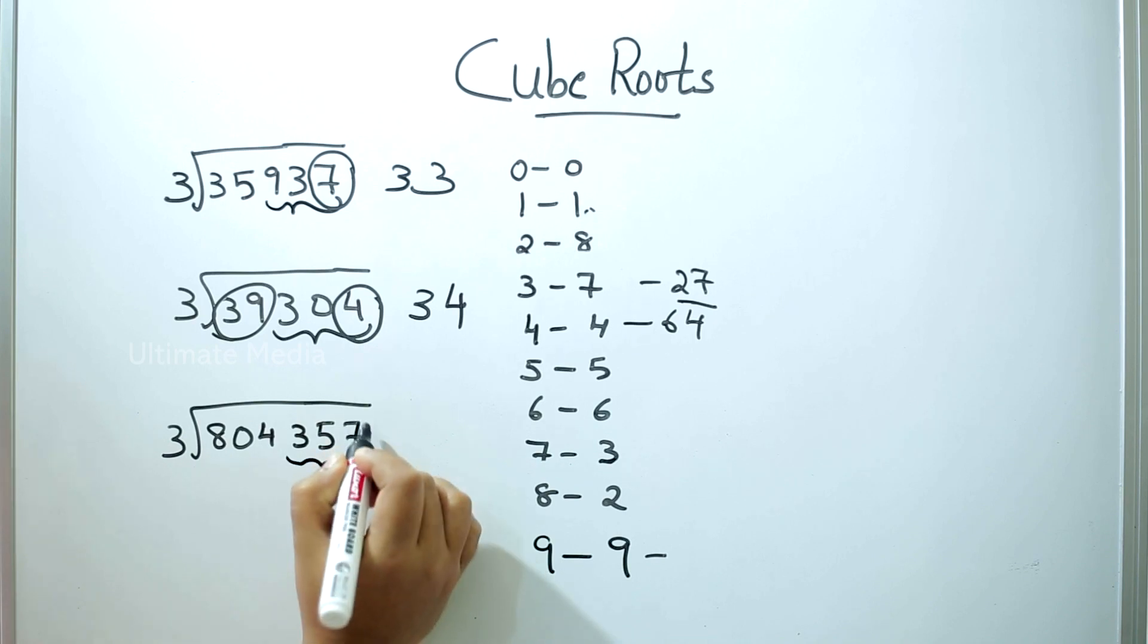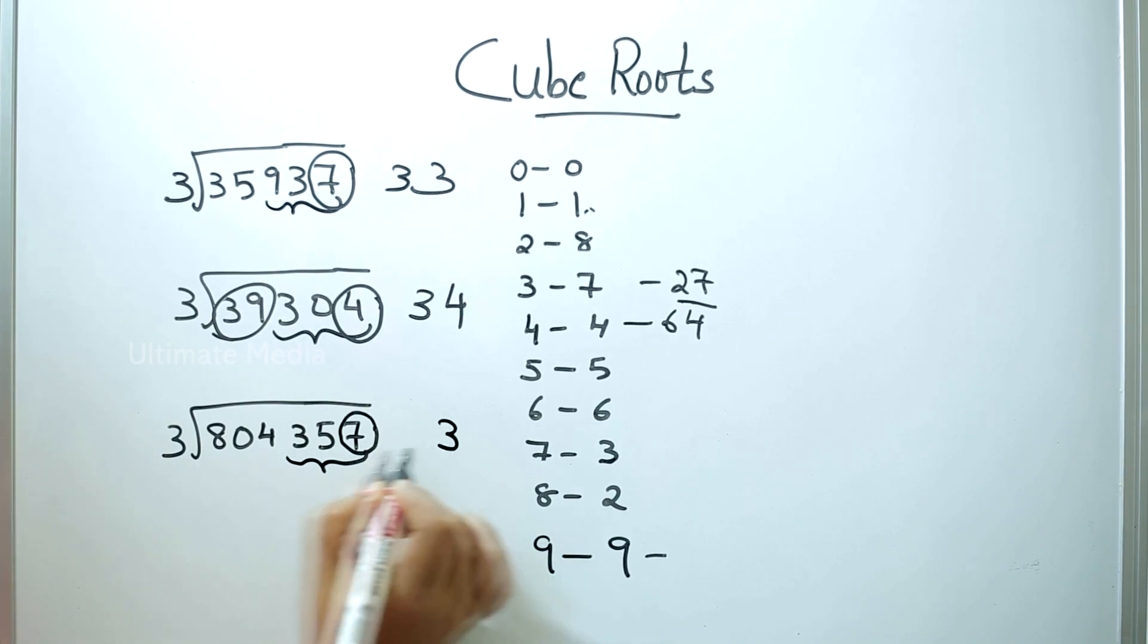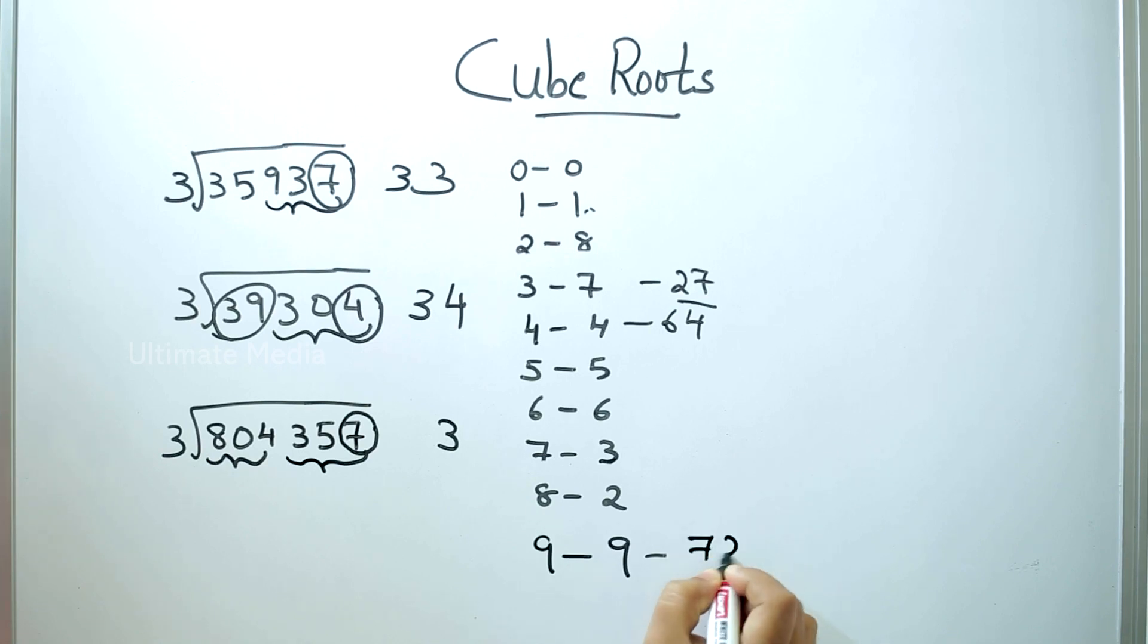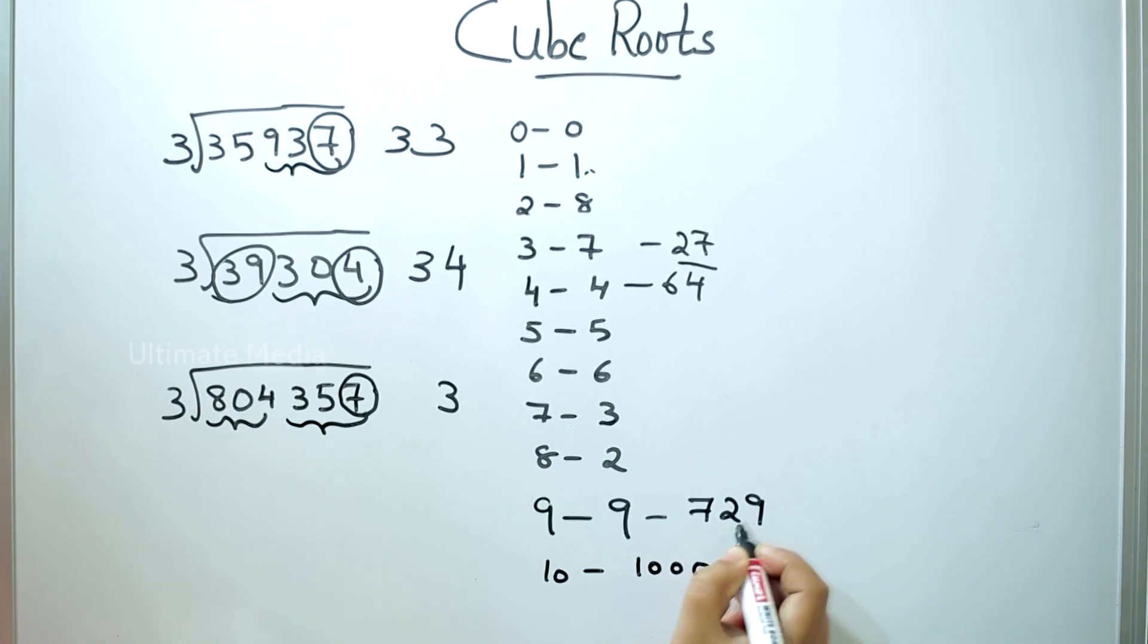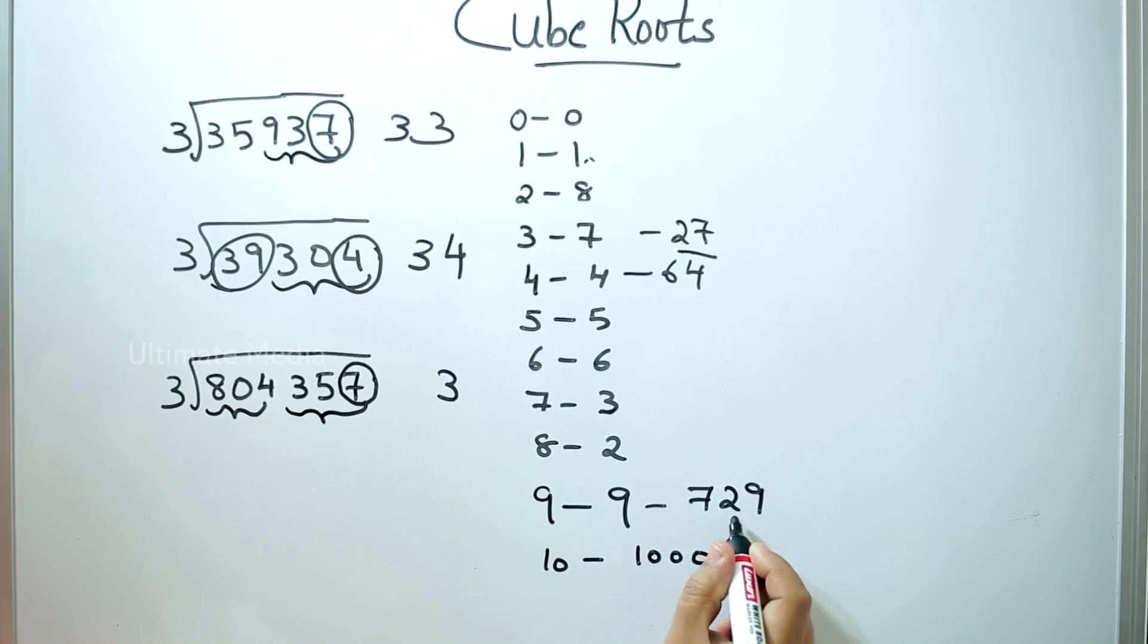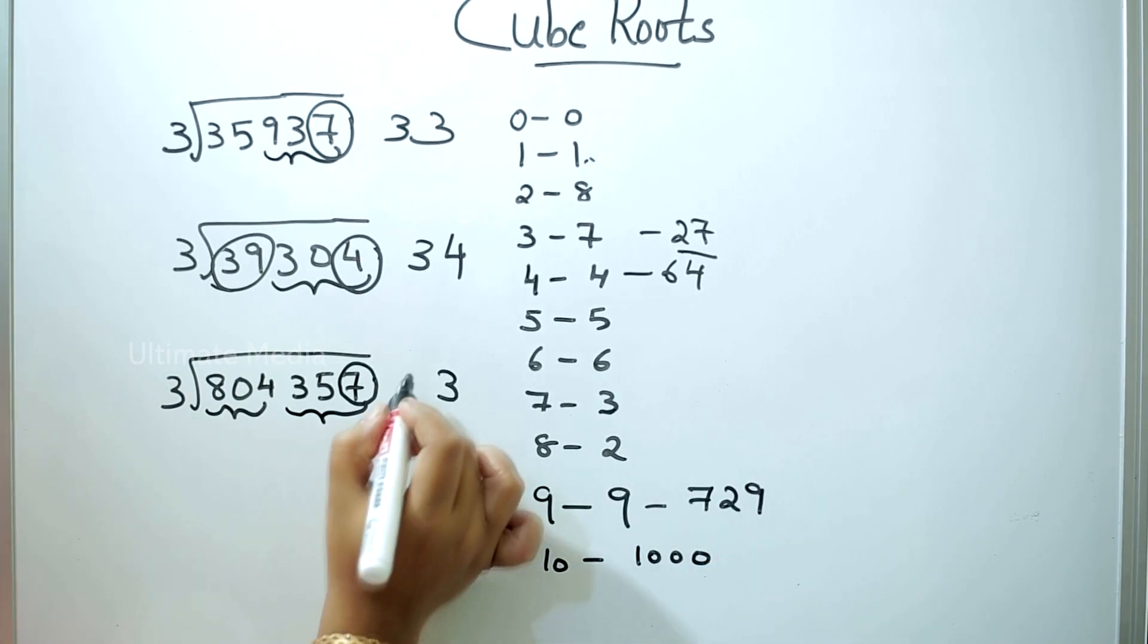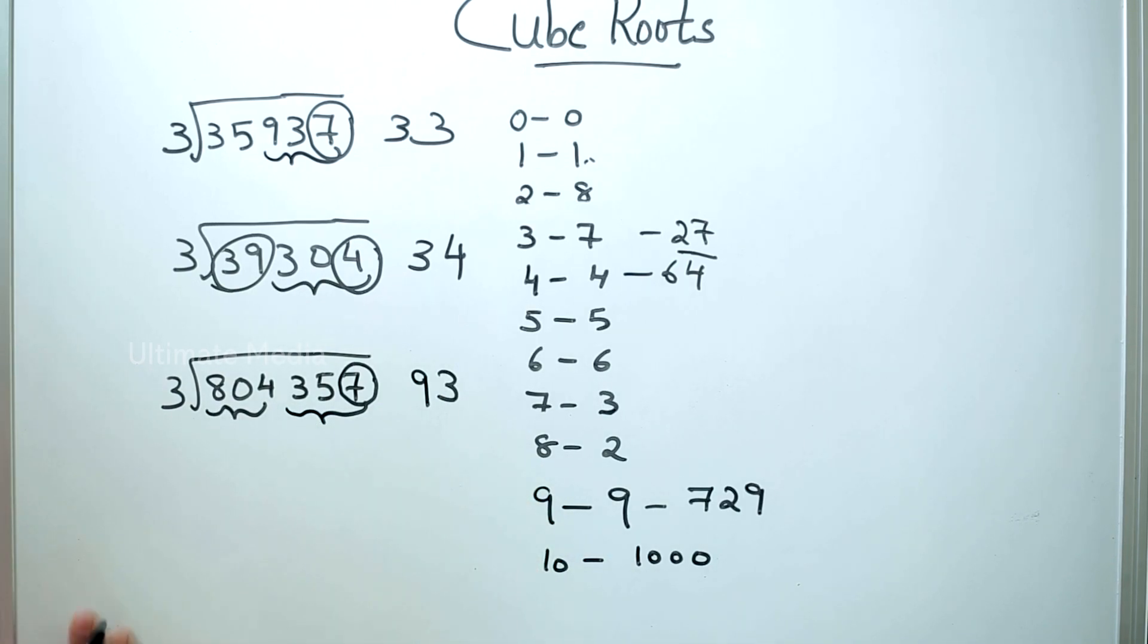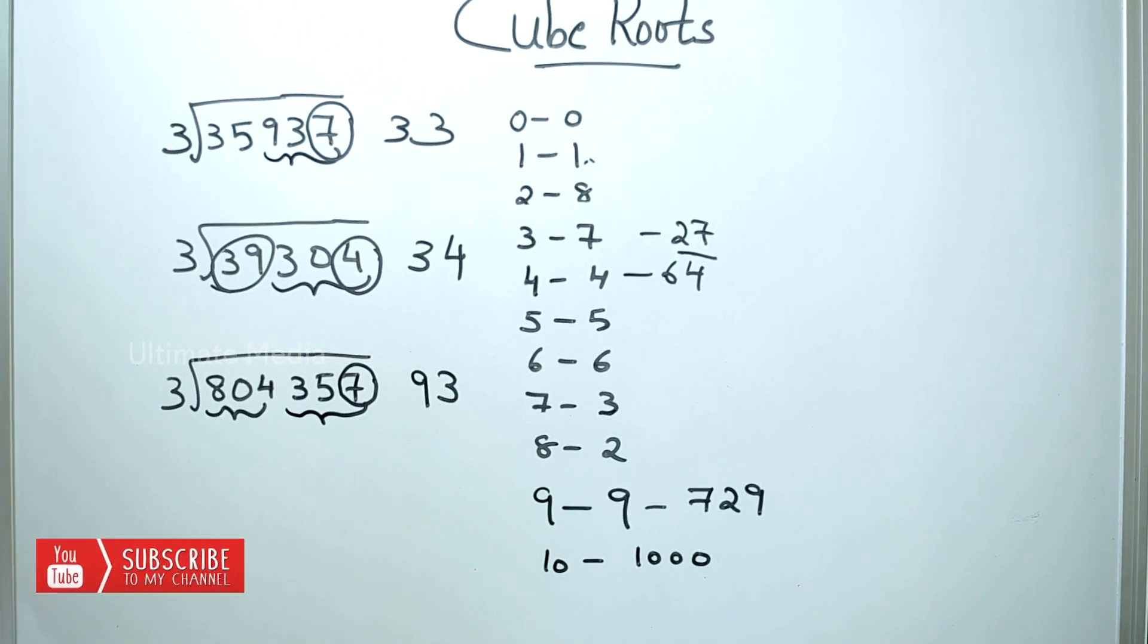Last 3-digit number, last digit number 7, 3. Then we have 80,357.